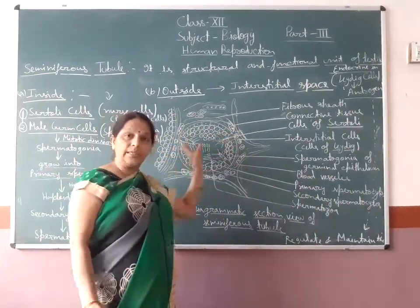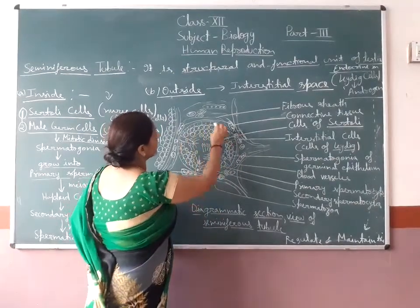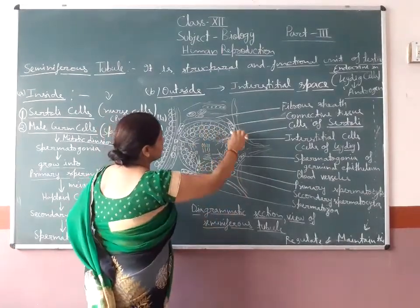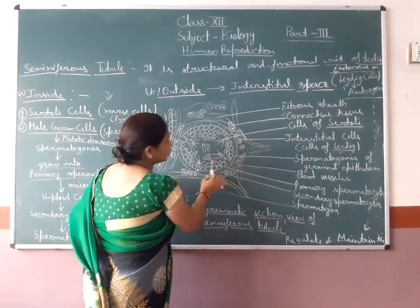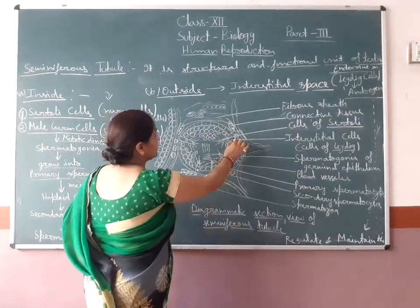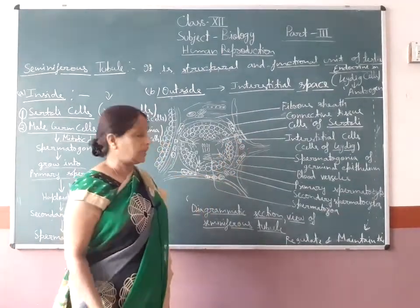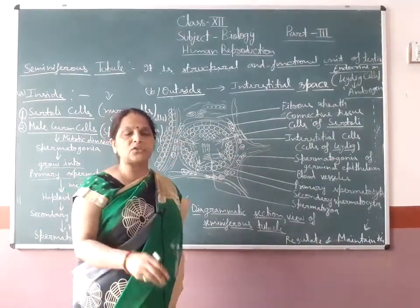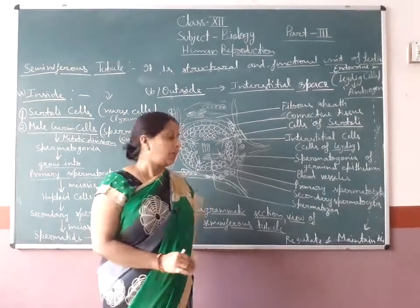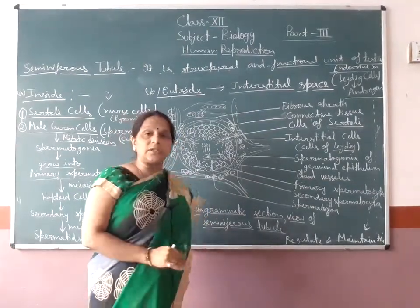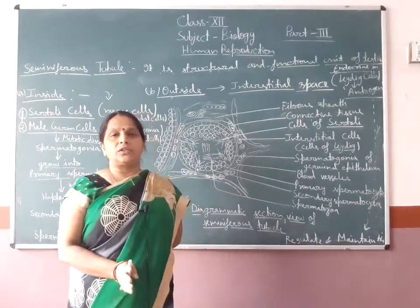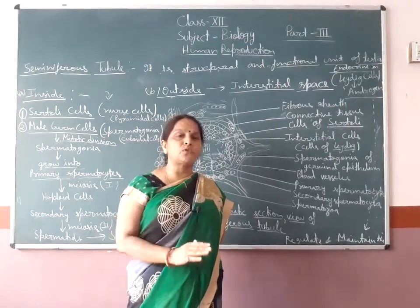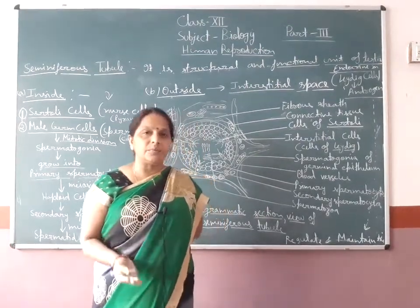All of you see here in the diagram — it is the internal structure of the seminiferous tubules. The inside wall is lined by cuboidal cells known as the primary germinal epithelial layer. It undergoes mitotic division. All of you should know about mitotic and meiotic division from previous classes. In mitotic division, all cells divide equationally, meaning the number of chromosomes remains the same as in the parent cell.